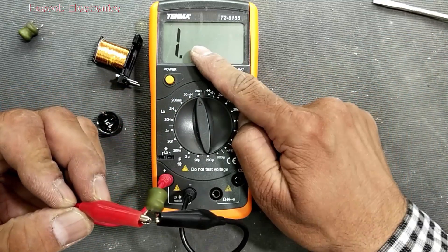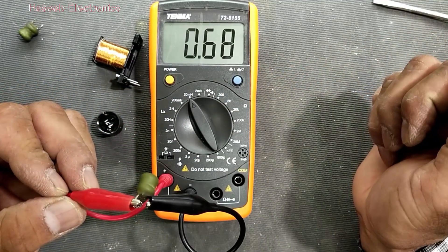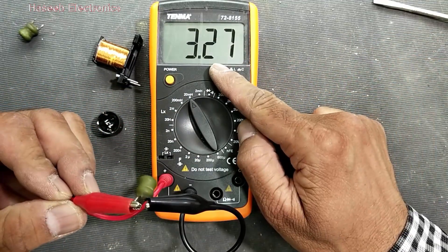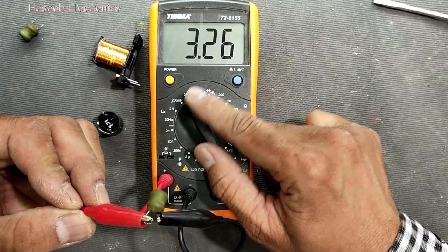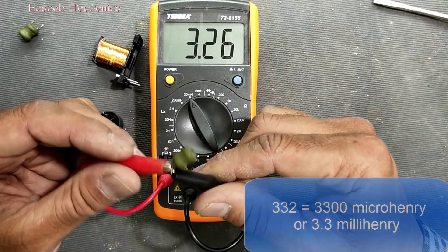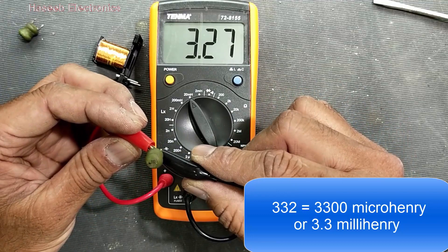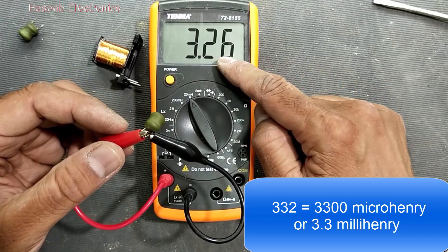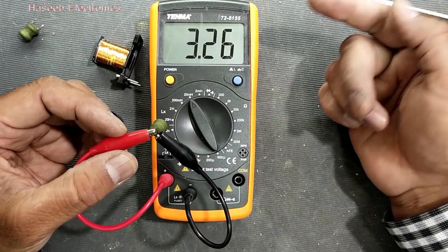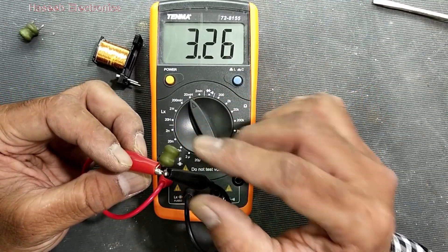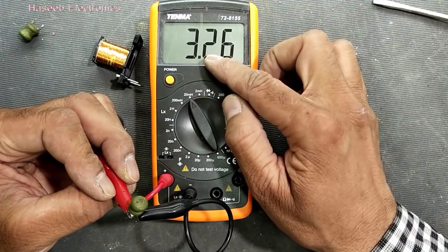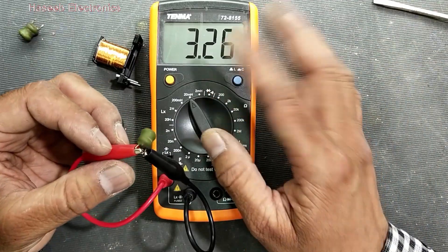I connected this inductor, it is giving over range. Here we have to increase the range. It will give 3.26, so its coding is 332. So 328, that's good - 3.28. The exact reading should be 3.30, so it is within range because in inductor we have to compromise.